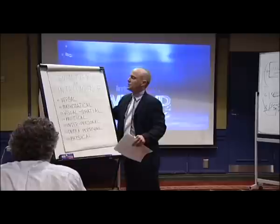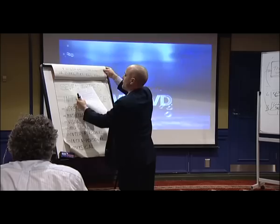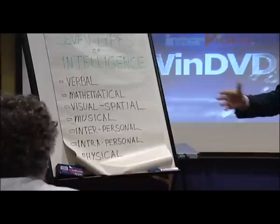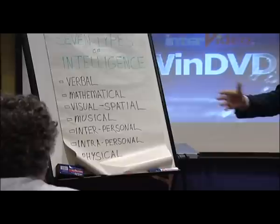Unlocking our creativity — that's what we're actually doing now. There are seven types of intelligence: verbal, mathematical, visual-spatial, musical, interpersonal, intrapersonal, and physical. Who'd like to give some examples of verbal intelligence?